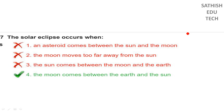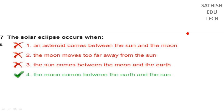A solar eclipse occurs when the moon comes between the earth and the sun. Next: who has become India's first woman IPS officer to successfully complete the South Pole expedition?